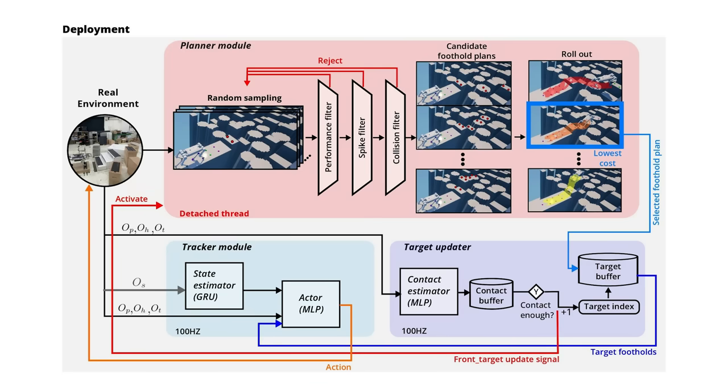The planner draws multiple foothold samples through random sampling and rejects risky and difficult footholds using consecutive filtering structures. Subsequently, the candidate foothold plans are evaluated through rollout in the physics simulation, and the one with the lowest cost is selected and provided to the tracker as the next target.